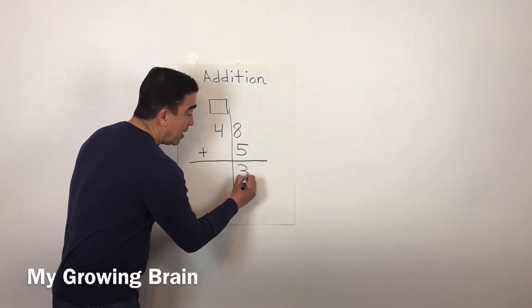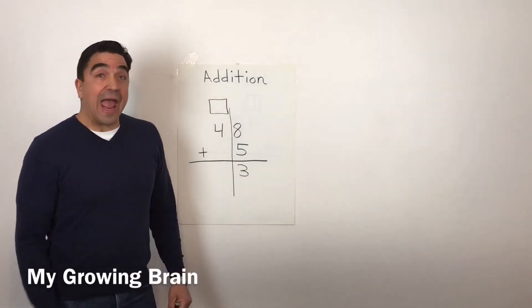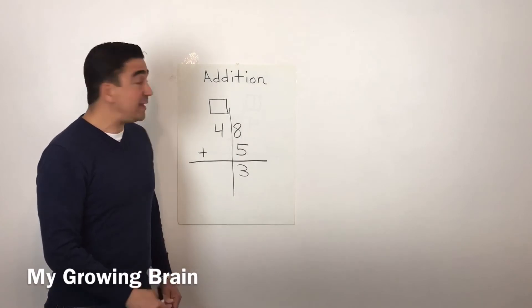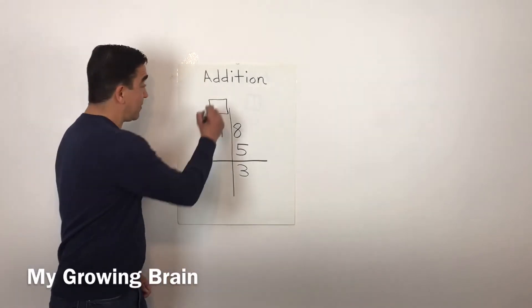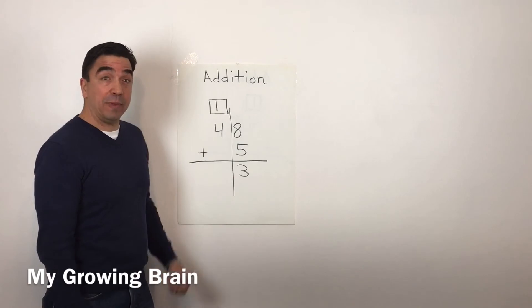So three goes in the ones place, and we're going to regroup the one into the tens place. I put the one in my regrouping box.